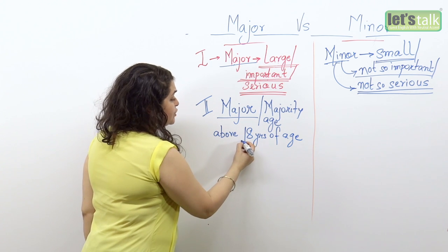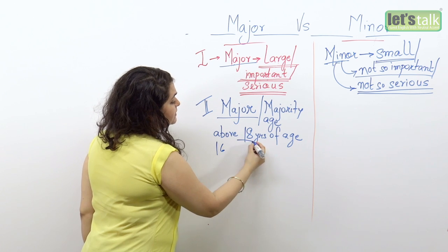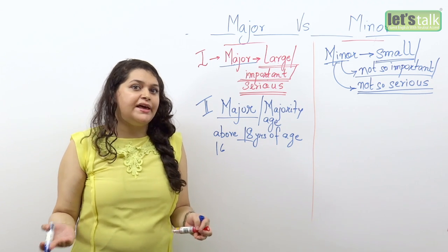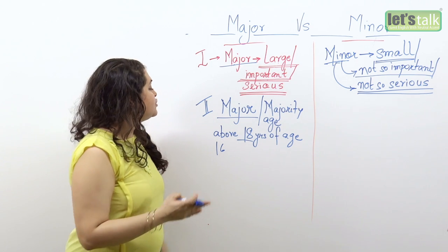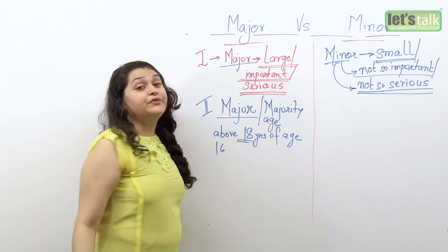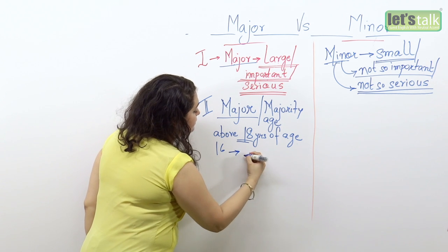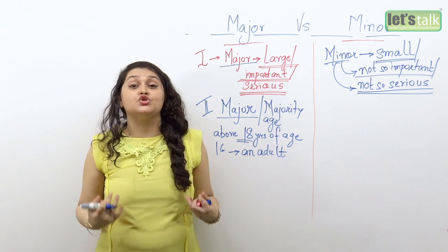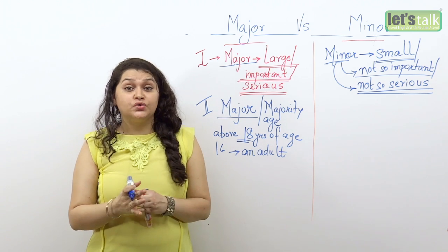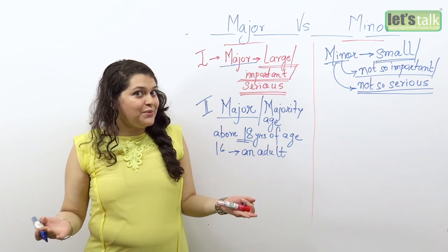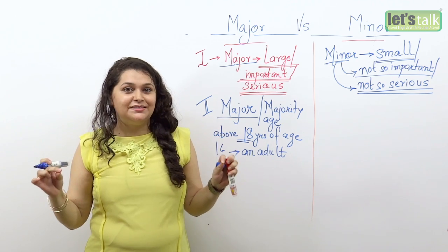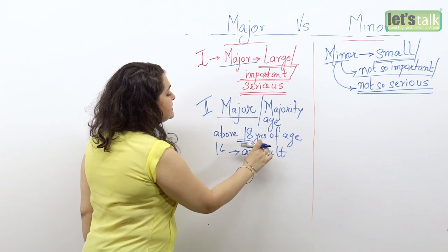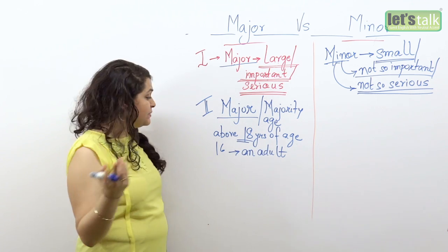In some countries this could be 16, in some countries 18 — it depends on the country. When I say that a person like John has reached majority age, it means John is now 18 years of age and for all practical purposes is considered an adult. Once you are an adult, you get the right to drive, you are allowed to vote, and you are also allowed to get married in some countries depending on the age limit set in that particular country. So the word major can denote a person's legal age of being an adult.